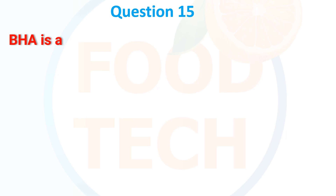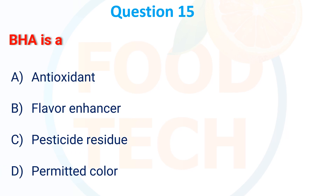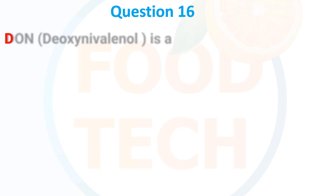BHA is a: A. Antioxidant, B. Flavor enhancer, C. Pesticide residue, D. Permitted color. The correct answer is antioxidant.